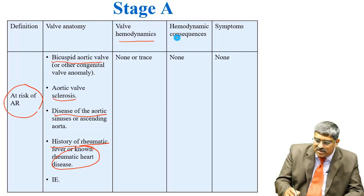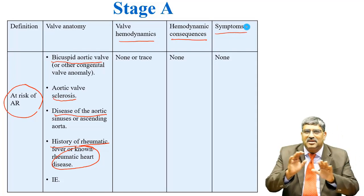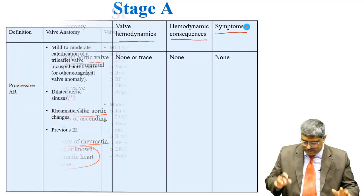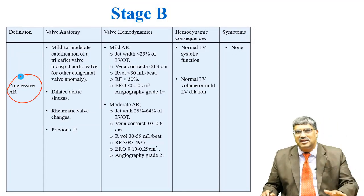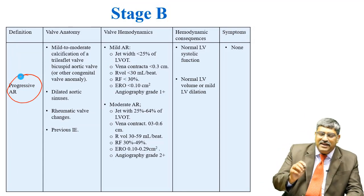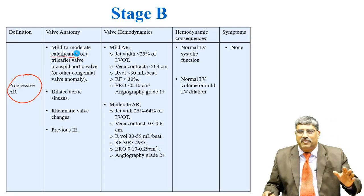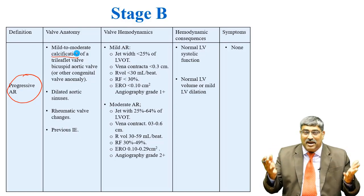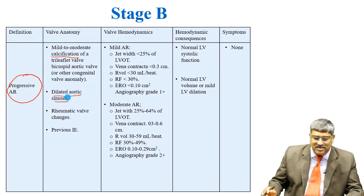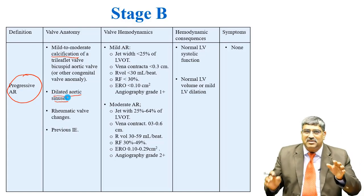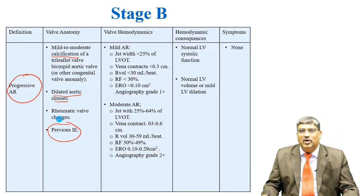In Stage A, the valve hemodynamics, consequences, and symptoms are not present because there is not much AR. Coming to Stage B, which is called progressive aortic regurgitation, there is mild to moderate calcification of the aortic valve — which can be tri-leaflet or a congenital bicuspid aortic valve — and there will be dilated aortic sinuses. Rheumatic valve changes of deformity and calcification can be present, as well as previous infective endocarditis.